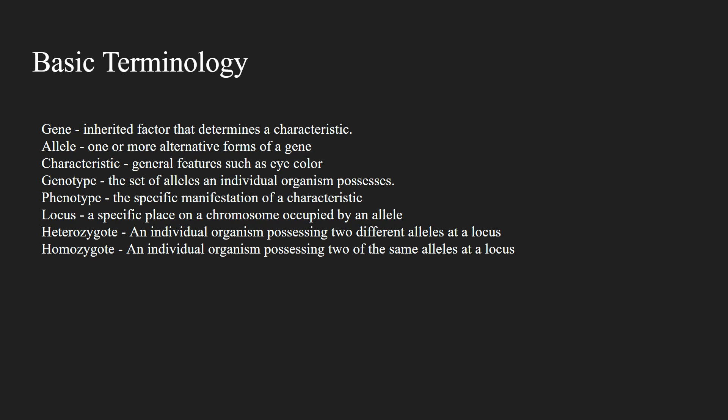For a characteristic such as eye color, the phenotype for an organism is a specific manifestation, such as blue eyes. A locus is the specific place on a chromosome occupied by an allele. A heterozygote is an individual organism possessing two different alleles at a locus. A homozygote is an individual organism possessing two of the same alleles at a locus.